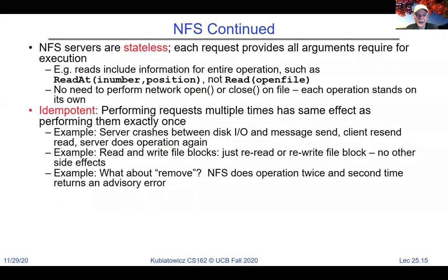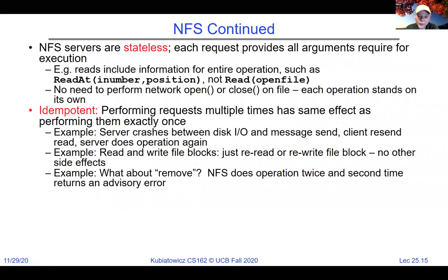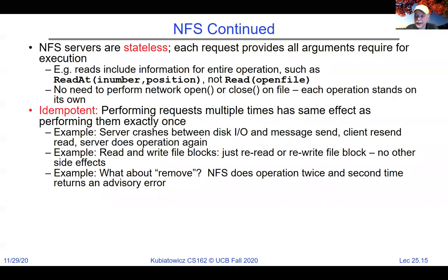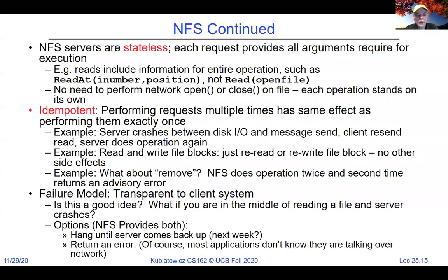There's no need to do open/close on the file across the network because the local client has enough information and every operation is self-contained. All operations are idempotent — you can perform requests multiple times with the same effect. For example, if the server crashes between a disk I/O and message send, the client just resends and the server does it again. For remove: if done twice, the second time just returns an advisory error saying the file wasn't there — keeping the protocol stateless and idempotent.